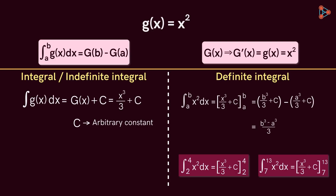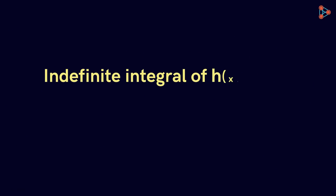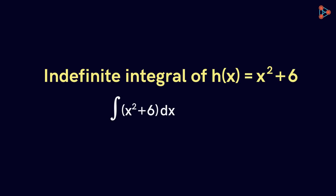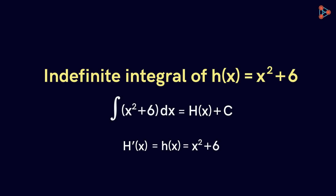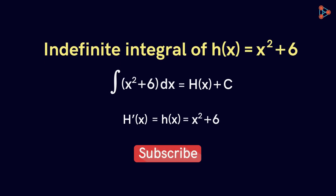So we see that related to a function, we have two types of integrals: indefinite integral and definite integral. Now let's see if you can find the indefinite integral of this function H of x equal to x squared plus 6. The indefinite integral of H of x will be given by a function capital H of x plus C. The function capital H of x should be such that its derivative is equal to H of x. Can you find the function capital H of x? Tell us your answers in the comment section below, and to keep learning such interesting things, do subscribe to our channel.